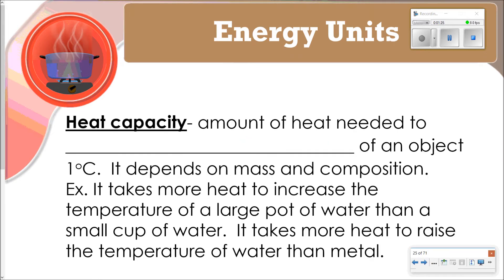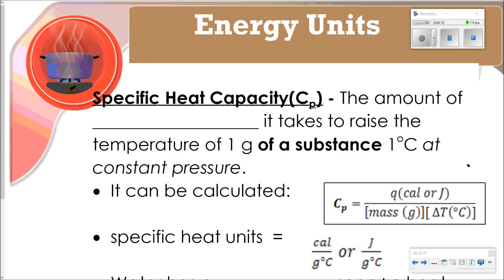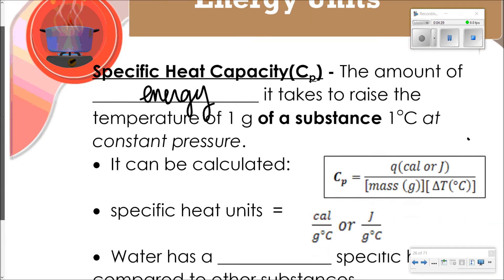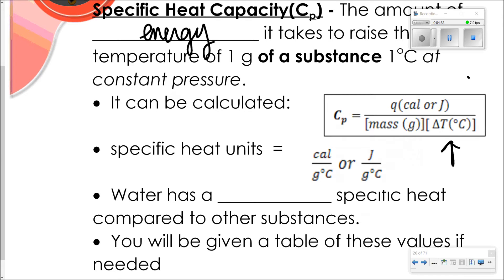Heat capacity, by definition, is the amount of heat needed to raise the temperature of an object one degree Celsius. It depends on mass and composition — for example, a large pot of water takes more heat to reach the same temperature than a very small pot. Specific heat capacity is the amount of energy needed to raise the temperature of one gram of a substance one degree Celsius at constant pressure, calculated with this equation, which you may recognize as a rearranged version of one used before in this course.